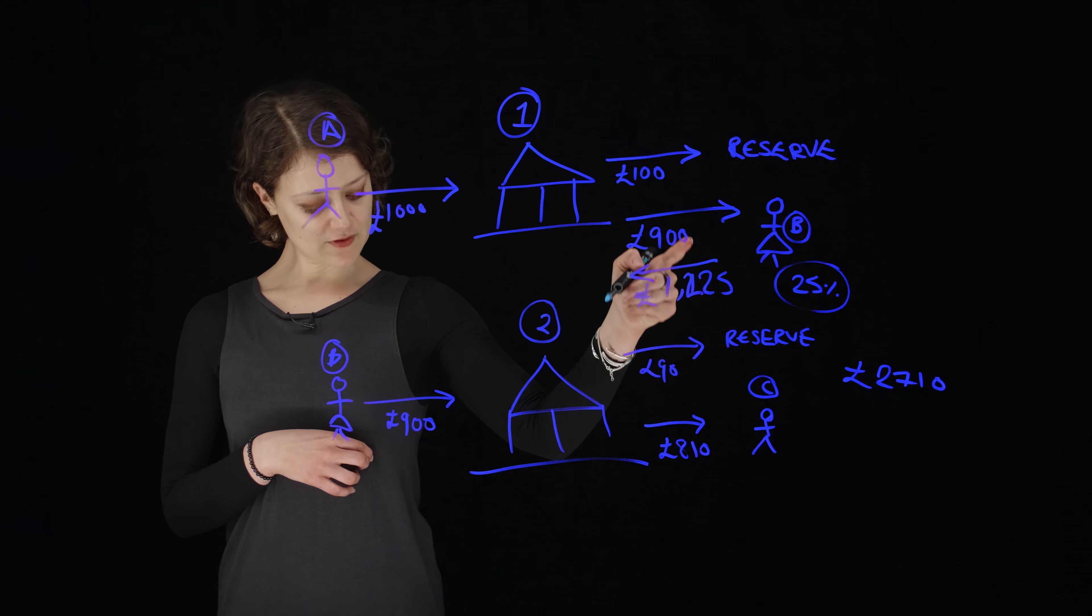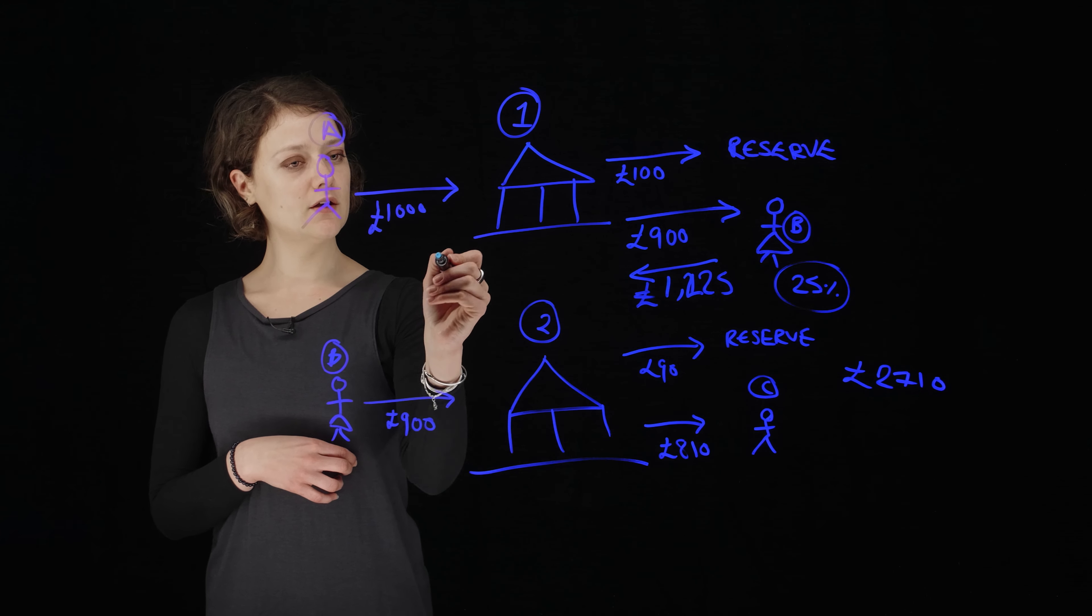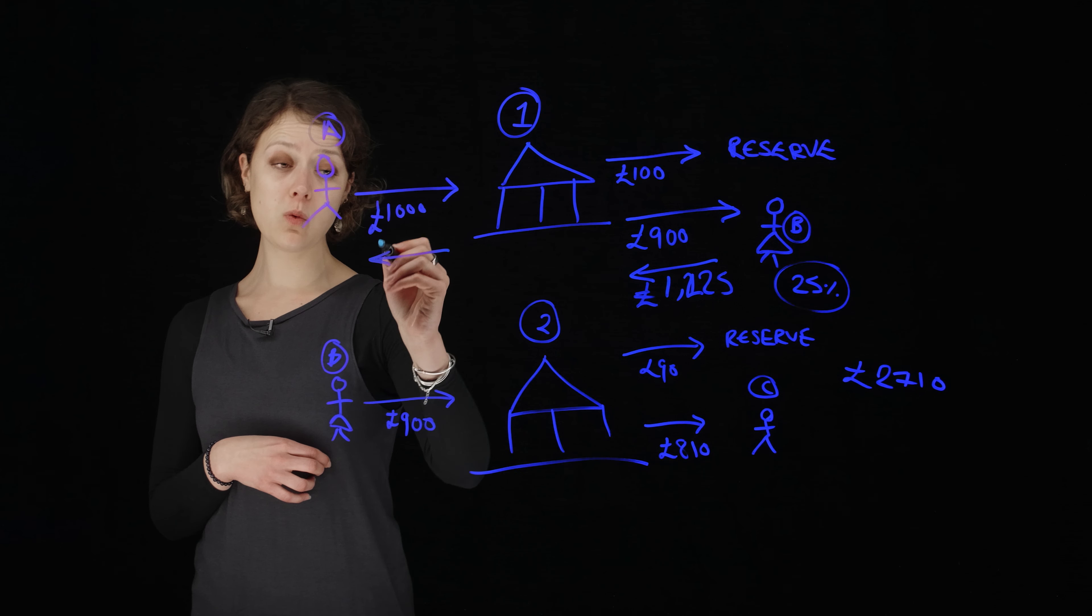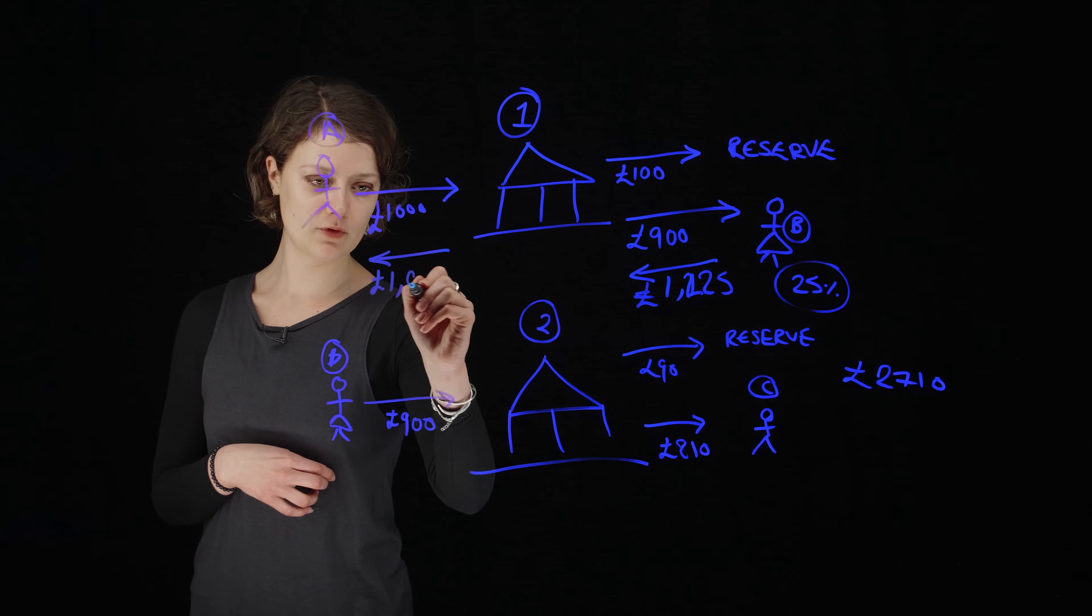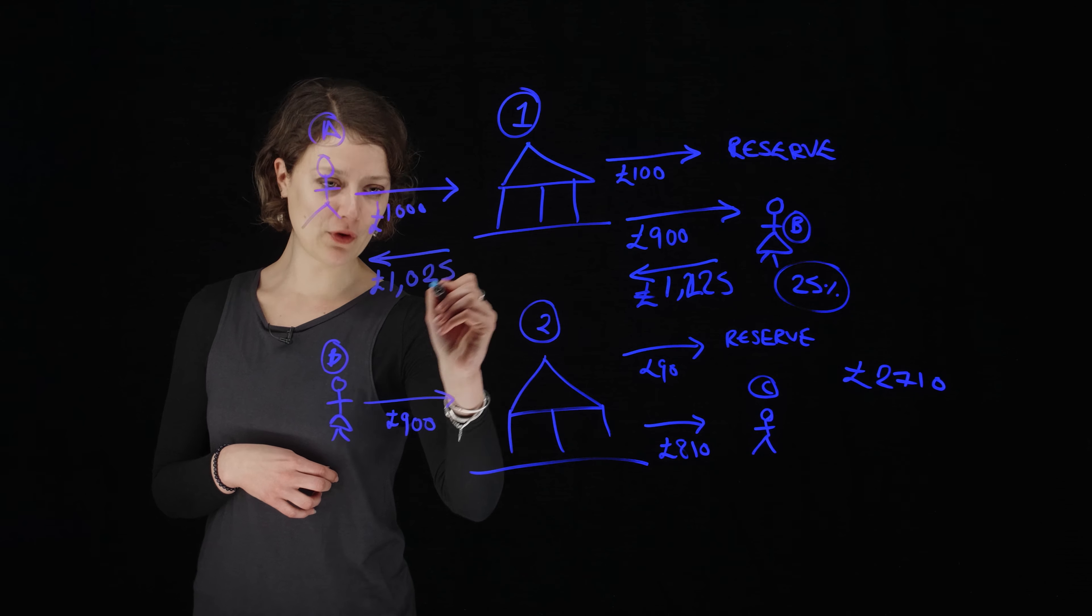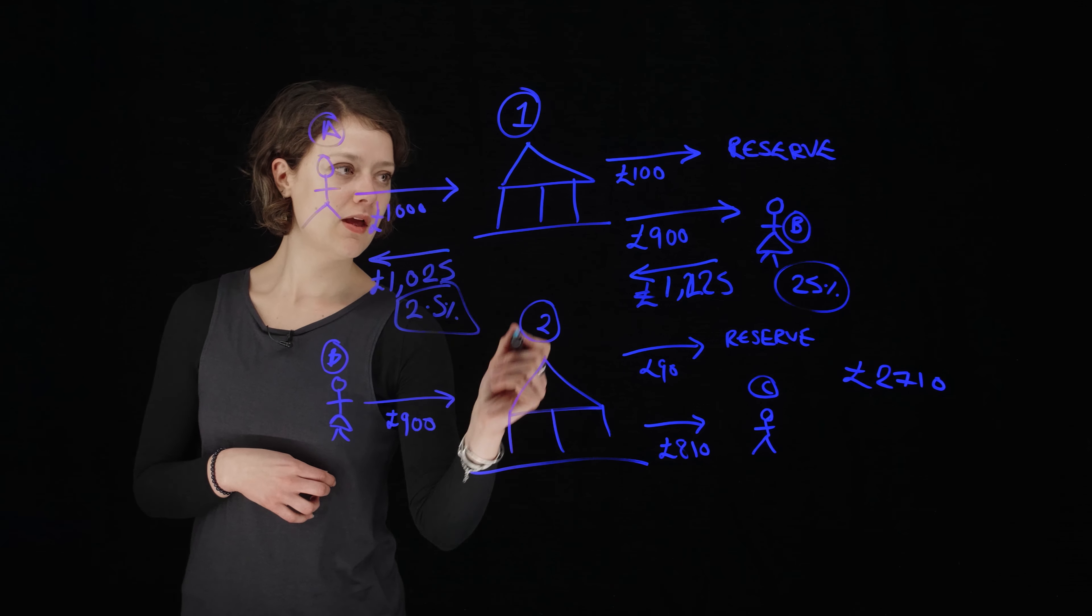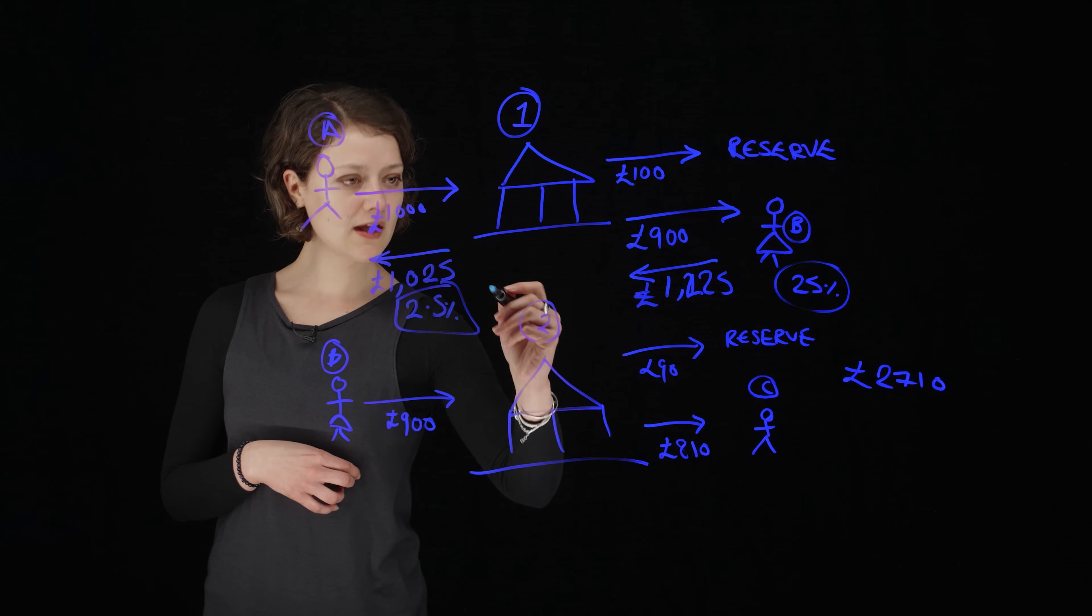But they're certainly not going to give them all of that because that's their cut. So what they're going to do is pay person A probably more like, although this is quite optimistic in the current environment as I'm recording this, 2.5 percent. So let's say we've got a savings rate of 2.5 percent.